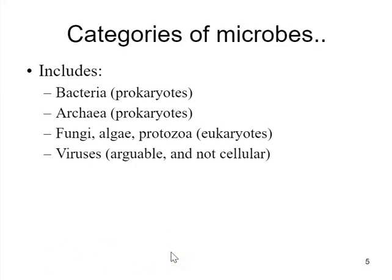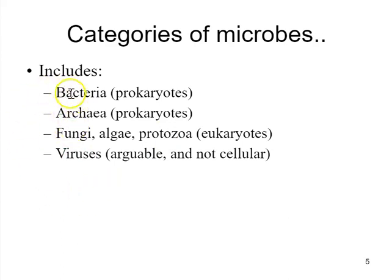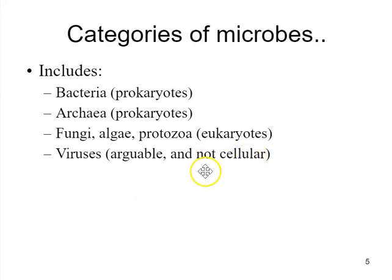There are many different ways of categorizing microbes. You can separate all microbes into groups: bacteria, archaea, fungi, algae, protozoa, or viruses. Bacteria, archaea, fungi, algae, and protozoa are all microbes made out of cells — each individual bacterium is a bacterial cell, and this is true for the others as well. These are all cellular microbes. In contrast, viruses are microbes and are living things, but they are not cellular — they have different structures.